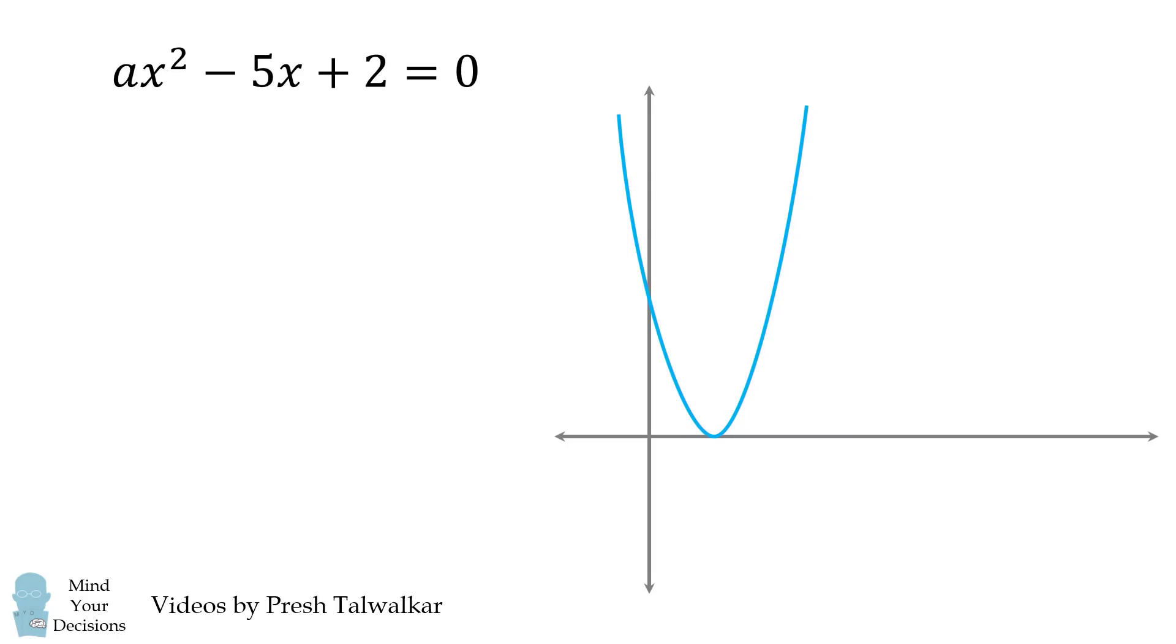this parabola will just become tangent to the x-axis and have one solution. This occurs when b² - 4ac is equal to 0, and we get a = 25/8.